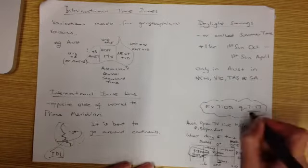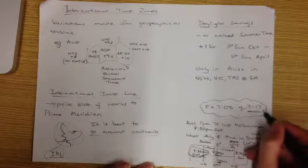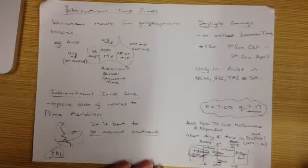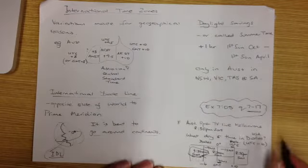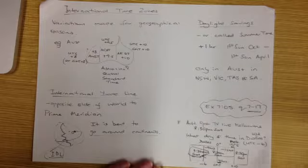You should be able to then work on exercise 705, questions 7 through to 17. And just quickly, because we have done some examples that are very similar to this, I'll just show you an example of what a question looks like in 705.